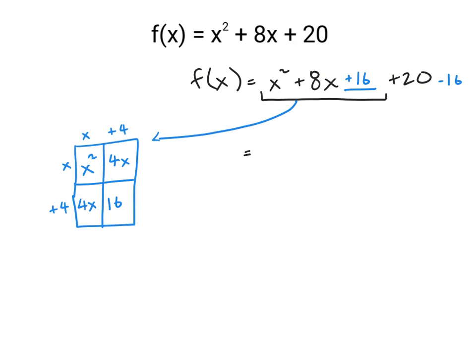Now we have x² + 8x + 16 + 20 - 16. When I put parentheses around these first three terms to help separate them, we see that they can be rewritten as (x + 4)² + 20 - 16.